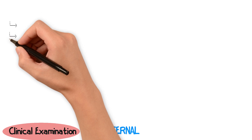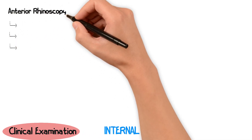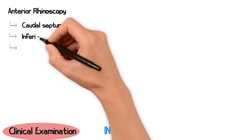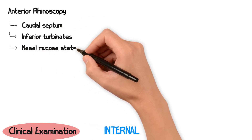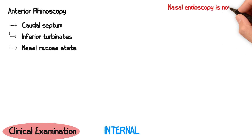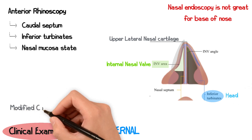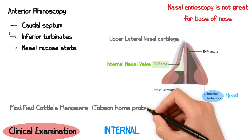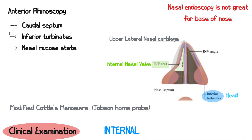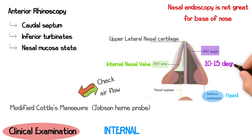The internal, or endonasal, examination comprises anterior rhinoscopy to examine the caudal septum, the inferior turbinates, and the state of the nasal mucosa. Look carefully at the internal nasal valve — the cross-sectional area between the nasal septum, the upper lateral cartilages, and the head of the inferior turbinates. Carry out a modified Cottle's manoeuvre using a Jobson-Horn probe to gently move the upper lateral cartilages to see if airflow improves. The ideal angle between the upper lateral cartilages and septum should be approximately 10 to 15 degrees.